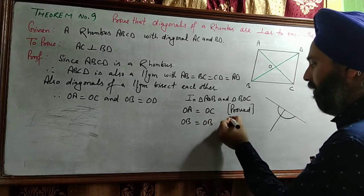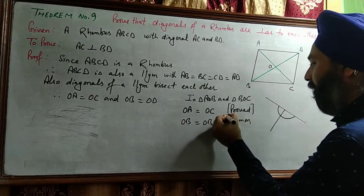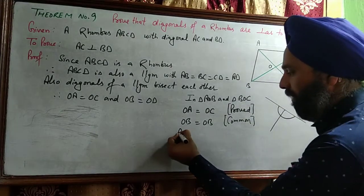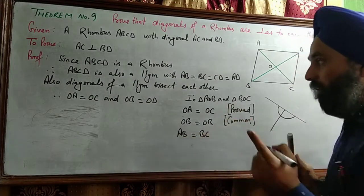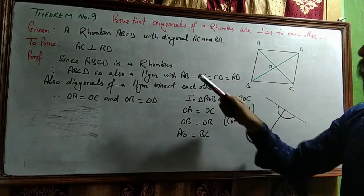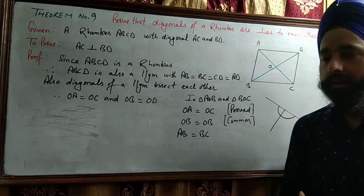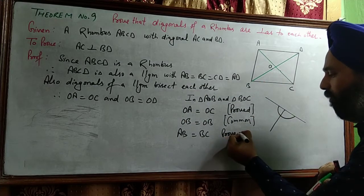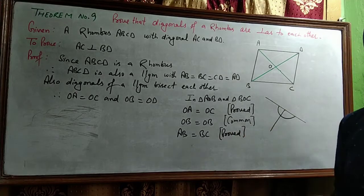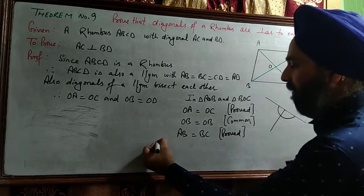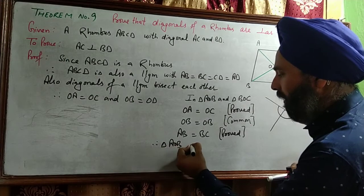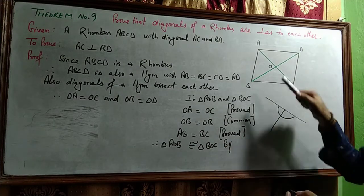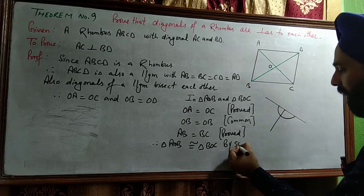Third part: AB is equal to BC — these two sides are also equal because ABCD is a rhombus and a rhombus has all sides equal. So we have mentioned this property earlier. Therefore, all three parts of triangle AOB are equal to the corresponding three parts of triangle BOC, and we use SSS (Side-Side-Side) congruence.